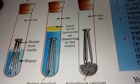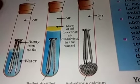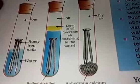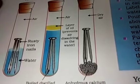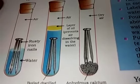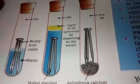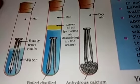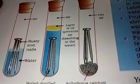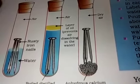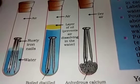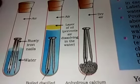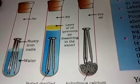An alloy is prepared by first melting the primary metal and then dissolving the other elements in it in a definite proportion. It is then cooled at room temperature. For example, if we take gold — do you think 24-karat gold is used to make jewelry?